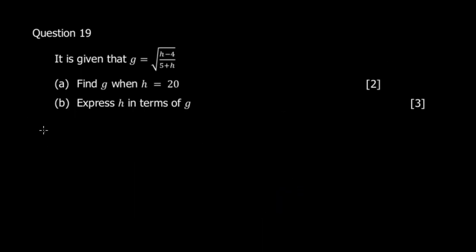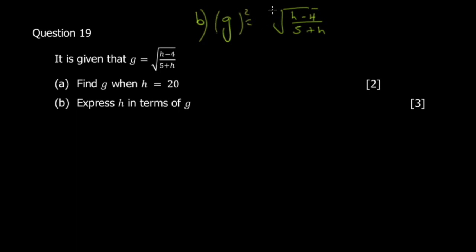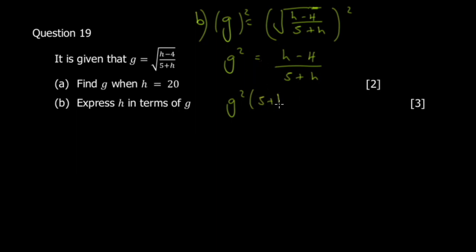Part b says express h in terms of g — this is a change of subject formula. Starting with g = √((h-4)/(5+h)), to free the terms inside the square root, square both sides to get g² = (h - 4) / (5 + h).